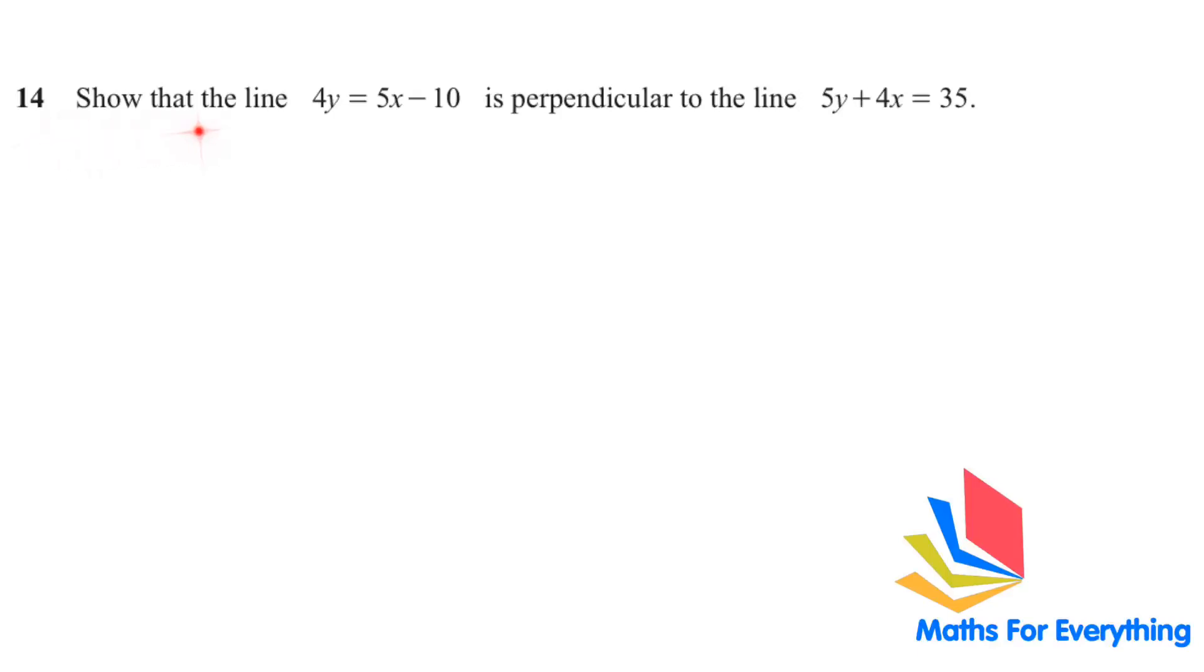Question number 14. Show that the line 4y = 5x - 10 is perpendicular to the line 5y + 4x = 35. The first thing we will do is write both the lines in the format y = mx + c. We will find the gradient of each line; m is the gradient. So 4y = 5x - 10, y = 5/4 x - 10/4. The next line is 5y + 4x = 35, so 5y = -4x + 35. Divide both the sides by 5.